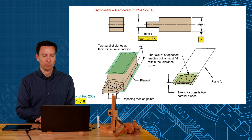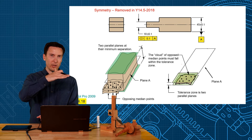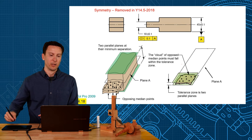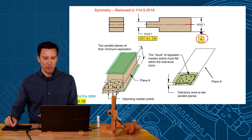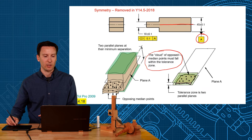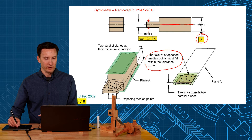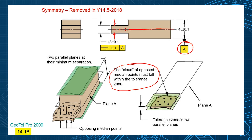The symmetry symbol had the same problem. You're not looking at one center plane relative to another center plane. The datum is the center plane, but symmetry controls the cloud of opposing midpoints. You take an infinite number of opposing midpoints and get a shape in the middle that looks like a little wet rag — and that wet rag has to fall within your tolerance zone of 0.1, two parallel planes. But people really just want one center plane located to the other, so they wanted position tolerance all along.